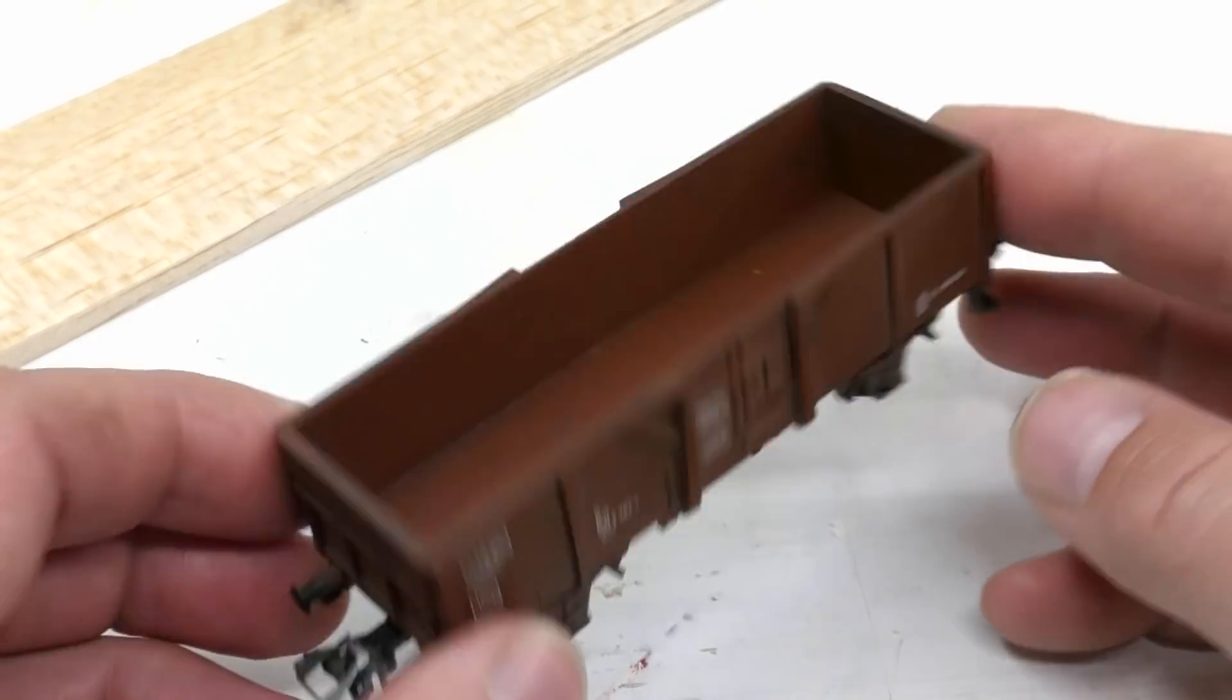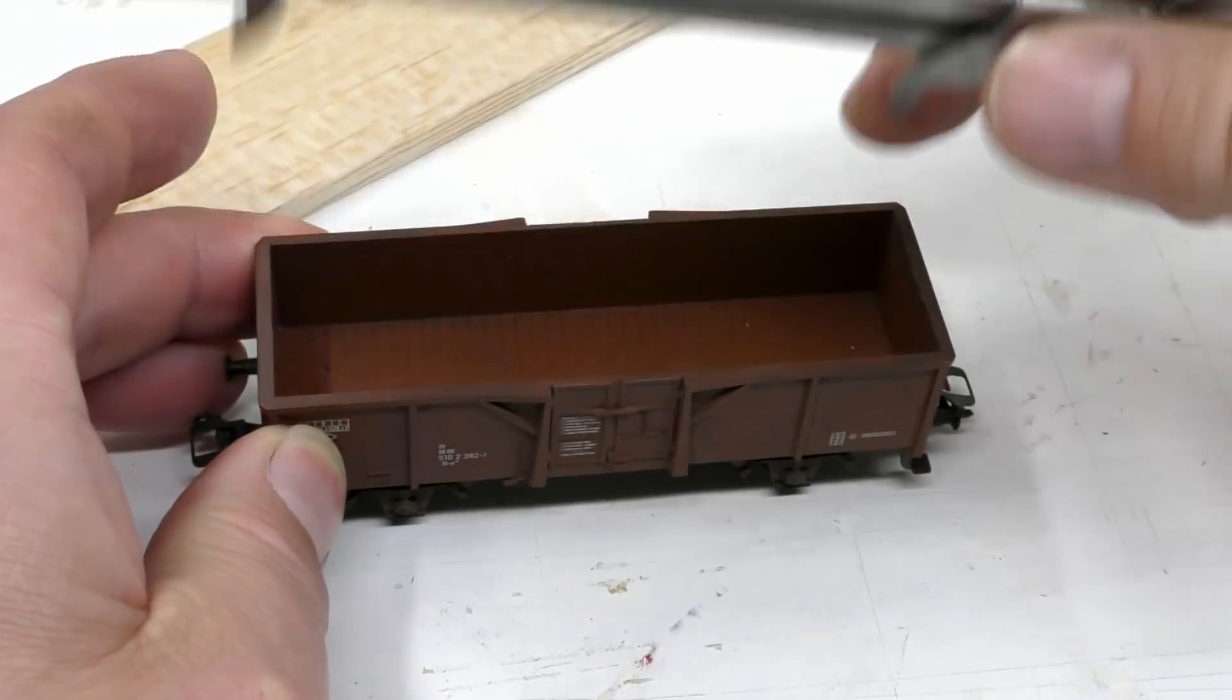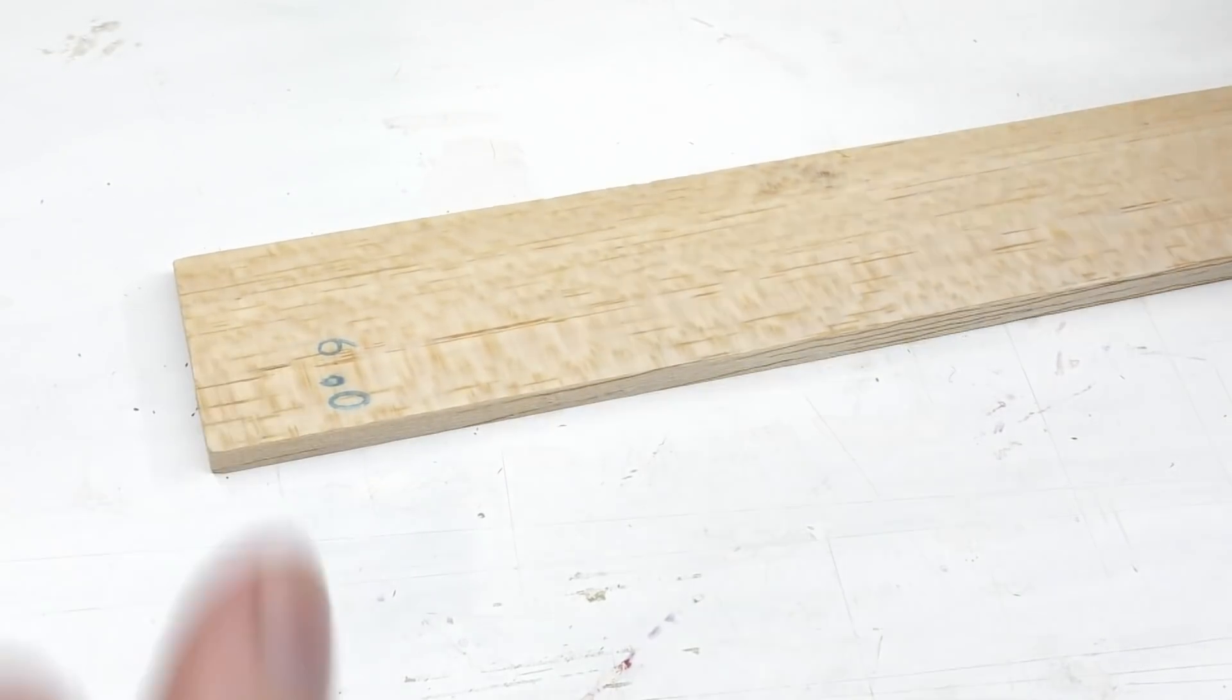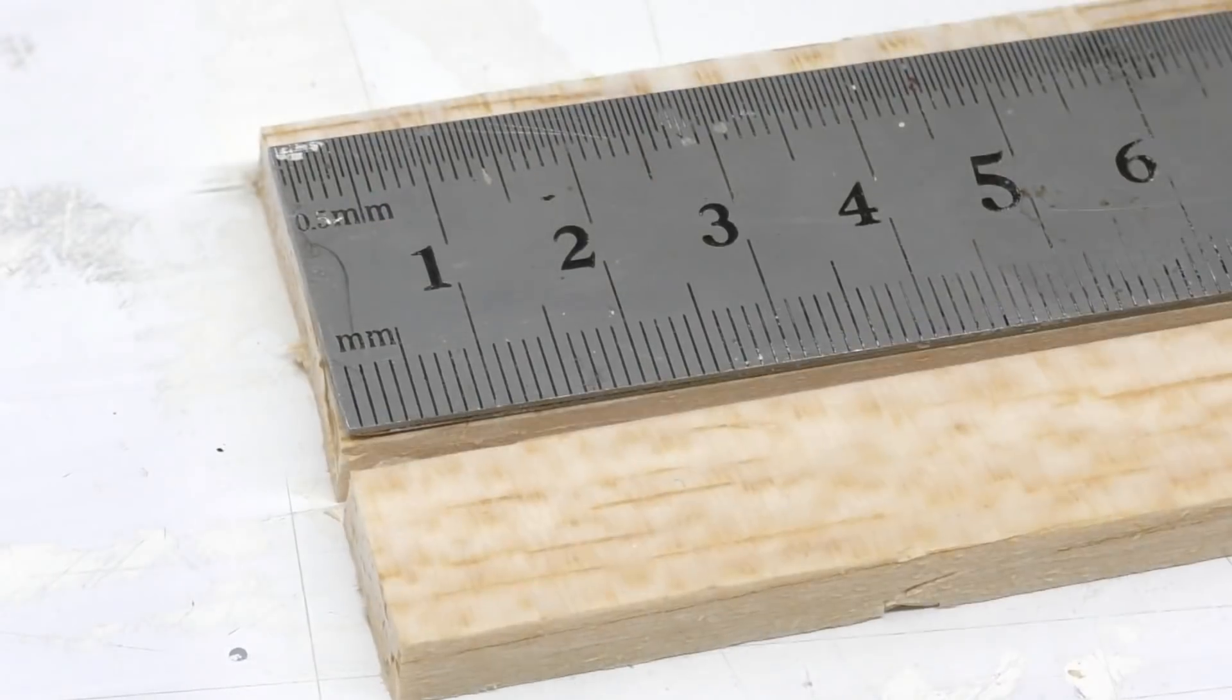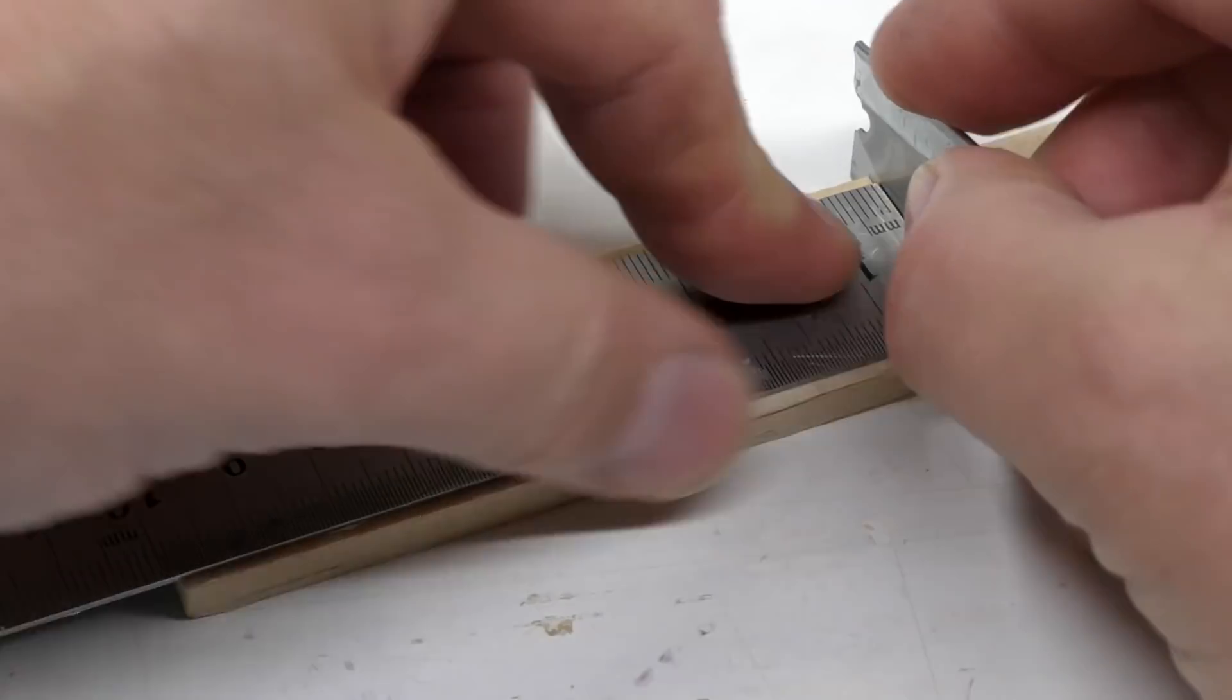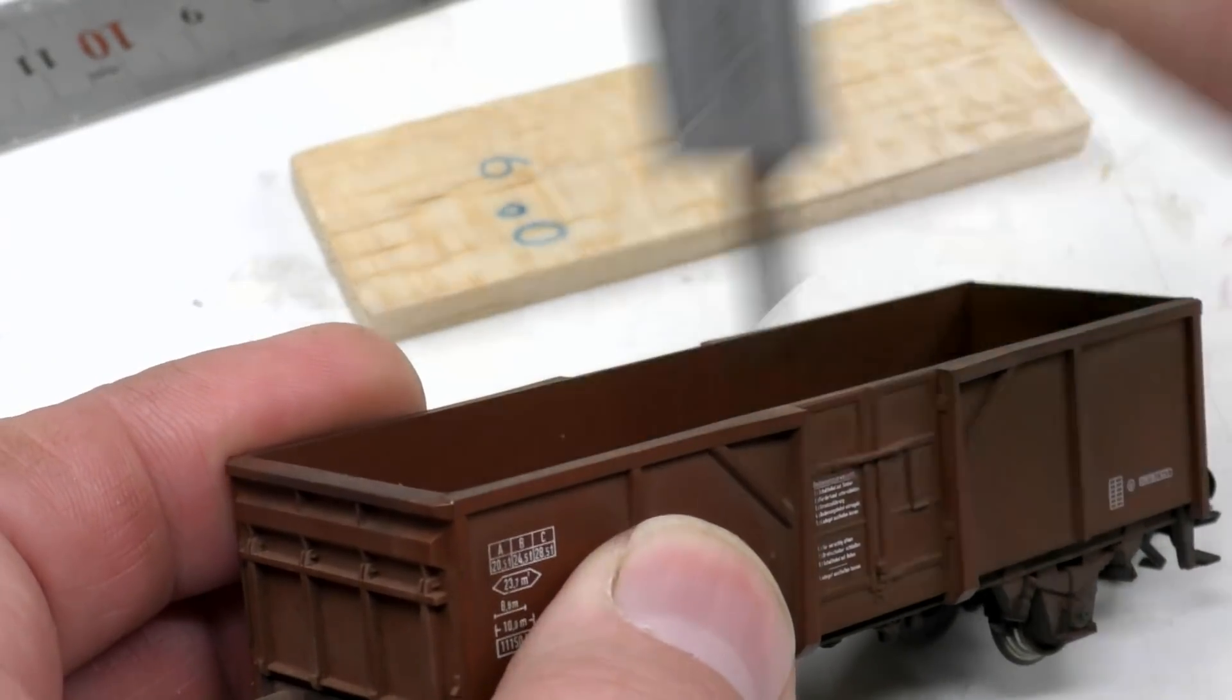When it comes to bulk materials delivered in open cars it's quite easy to make this on your own. I'm using a balsa sheet. This one's a six millimeter or a quarter of an inch. And I cut it to the same size as the car floor. So this will be our mounting plate for the cargo which will be glued on top.